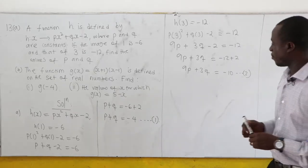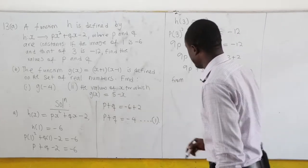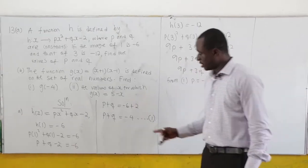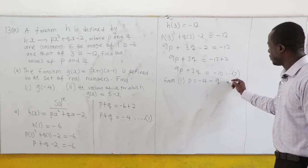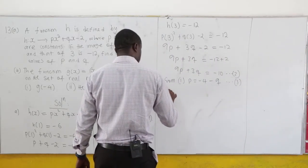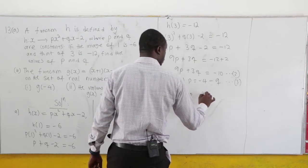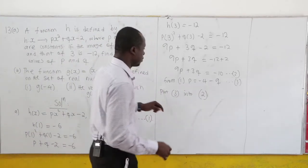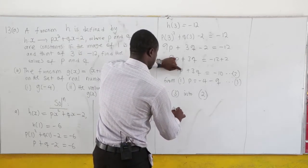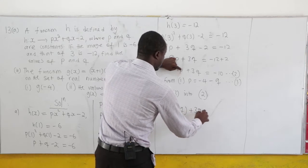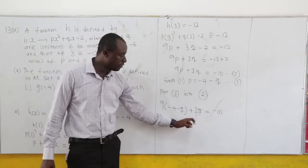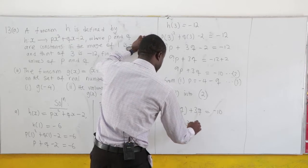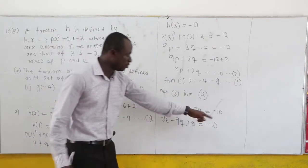Now we solve equations 1 and 2 simultaneously. From equation 1, let's make p the subject: p = -4 - q. This is equation 3. We substitute equation 3 into equation 2. Wherever we see p, we put (-4 - q). So we have 9(-4 - q) + 3q = -10. Using the distributive rule to expand: 9 × 4 gives negative 36, so we have -36 - 9q + 3q = -10.